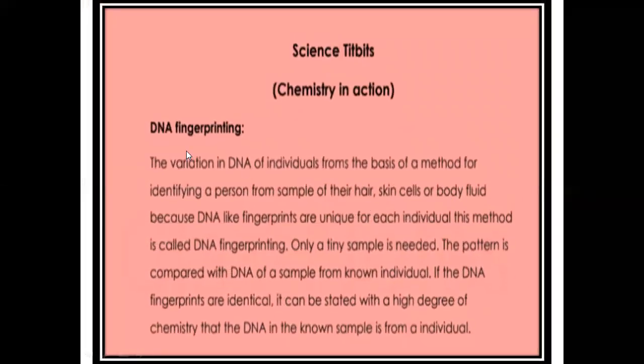Science tidbit — DNA fingerprinting: the variation in DNA of individuals forms the basis of a method for identifying a person from a sample of their hair, skin cells, or body fluid, because DNA, like fingerprints, is unique for each individual. The DNA of all individuals is different, and that is why we can use DNA testing for the identification of an individual — for example, if parents want to identify their child, they can do a DNA test.